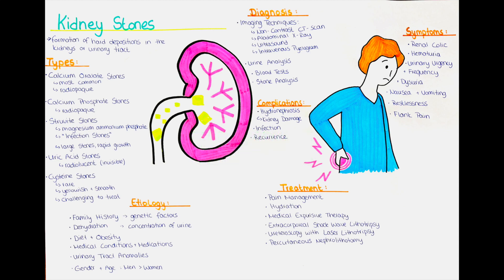How can we diagnose kidney stones? The diagnosis of renal stones typically involves a combination of medical history, physical examination and diagnostic tests. We will usually ask about the patient's symptoms, medical history, family history and risk factors for kidney stones. We also perform a physical examination to assess for any signs of kidney stone related pain or tenderness. We can do different imaging studies. Non-contrast CT scan is the most accurate imaging test for diagnosing kidney stones. It uses X-rays to create detailed images of the urinary tract and can detect even small stones.